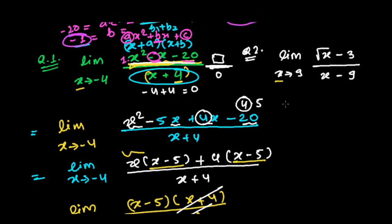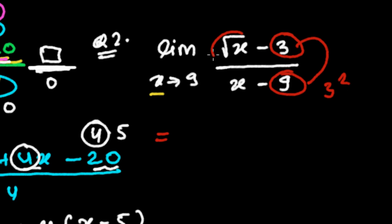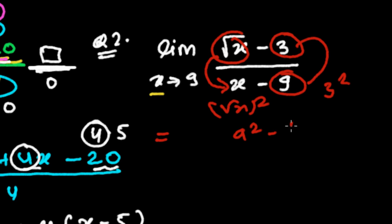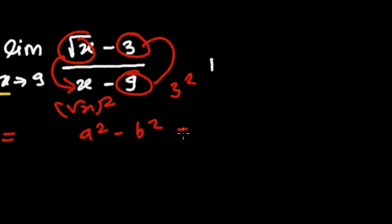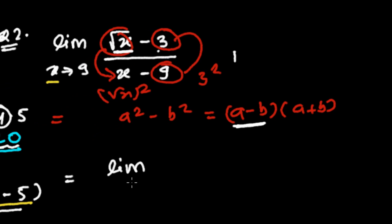The second question is: limit as x tends to 9 of (√x - 3) / (x - 9). The trick here: 3² = 9 and (√x)² = x. So the denominator is of the form a² - b², and we know the identity a² - b² = (a - b)(a + b). We will use this to factor the denominator.